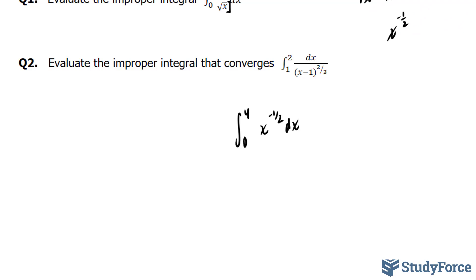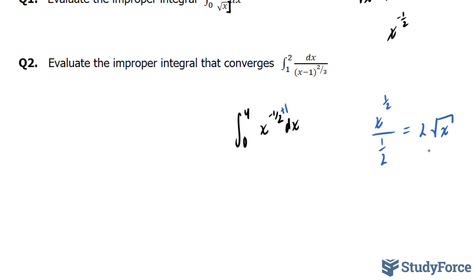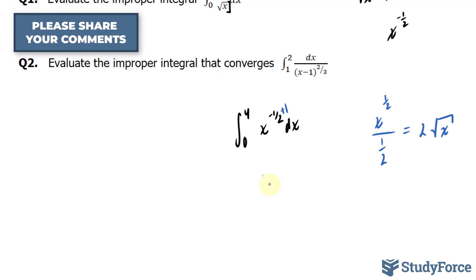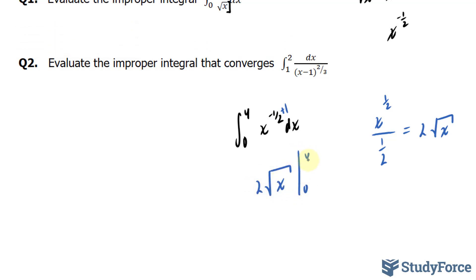Next I'll take the integral of this function by adding one to the exponent and dividing by that sum. So x to the power of negative one over two plus one gives one over two. Dividing the function by one over two gives me two times the square root of x. Two times the square root of x is the integral of the function we started with, and now I have to evaluate this expression between zero and four.